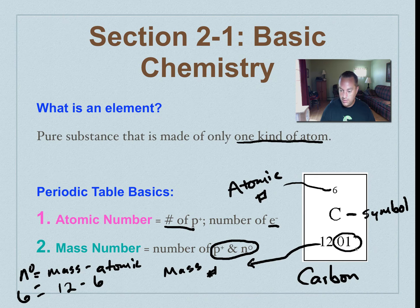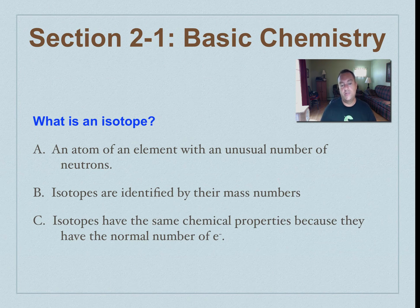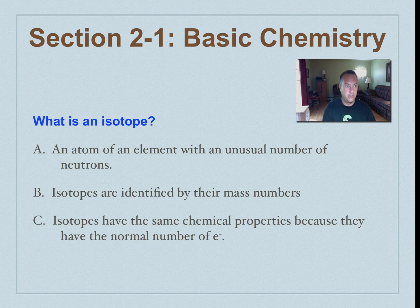This 0.01 comes from the fact that not every single atom of carbon is going to actually have 6 neutrons. Sometimes it's going to have 7. Sometimes it's going to be 8. And we call those isotopes. So what is an isotope? An isotope is an atom of an element with an unusual number of neutrons. In other words, if it's carbon, it doesn't have 6. Isotopes are usually pretty rare. The regular non-isotope is the more common form of this element. But occasionally there can be an extra neutron or 2 in there.